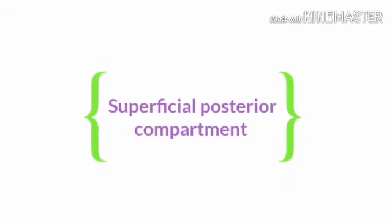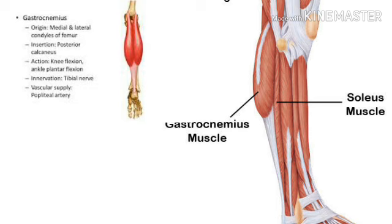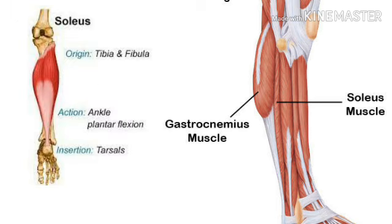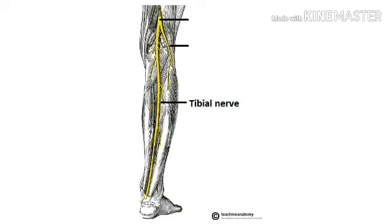Finally, the superficial posterior compartment contains the gastrocnemius, soleus, and plantaris muscles, all supplied by the tibial nerve. To summarize, a great way to remember the muscles of the body in a given region is to divide them into compartments. Thank you.